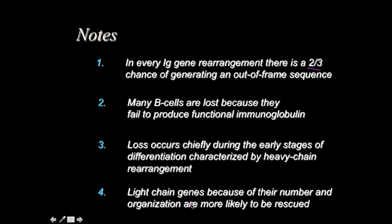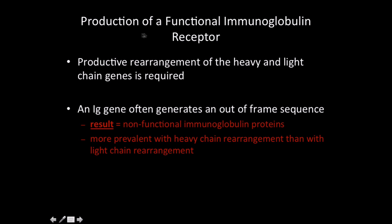Because of their number and the way they're oriented, mistakes with light chain rearrangements aren't necessarily as detrimental as with the heavy chain—there's room for error, we can have extra choices. Production of a functional immunoglobulin receptor is dependent upon productive rearrangement of both heavy and light chains. If it results in a frame shift, we say this is a non-functional immunoglobulin protein—every amino acid is going to be wrong. Frame shifts are more prevalent with heavy chain rearrangement than with light chain rearrangement.